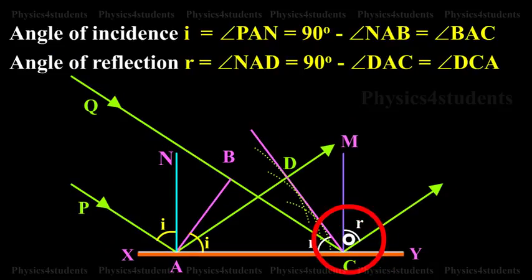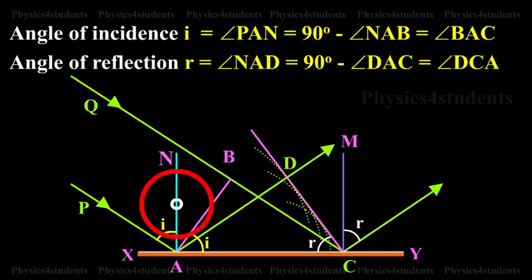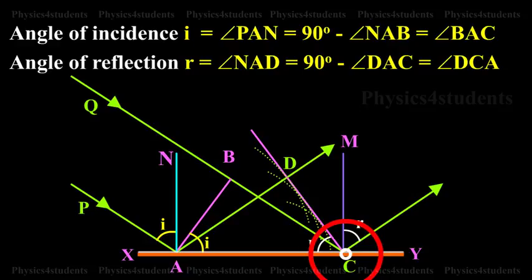Angle of reflection R is equal to angle NAD is equal to 90 degrees minus angle DAC is equal to angle DCA.